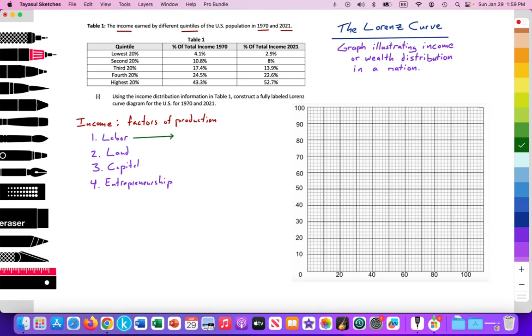Labor generates a form of income that we call a wage. Land generates a form of income that we call rent. Capital generates a form of income that we call interest. And entrepreneurship generates a form of income that we call profit. So these are the four types of income that's being measured through the Lorenz curve and its distribution. Now, when we look at the poorest households, we generally see that they only own one factor production, which is their labor. And if it's low skilled labor, it generates a low wage.